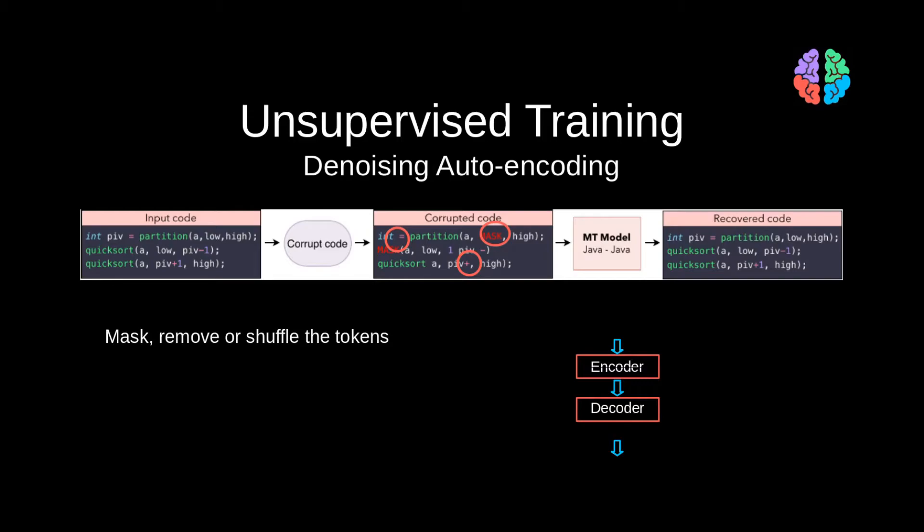But the model still lacks the ability to translate between languages, as we have never told the model which input belongs to which language. We simply add extra layers to the decoder and initialize them randomly. We add a token to say that the input language is Python or C++, so that the model can start differentiating between languages.